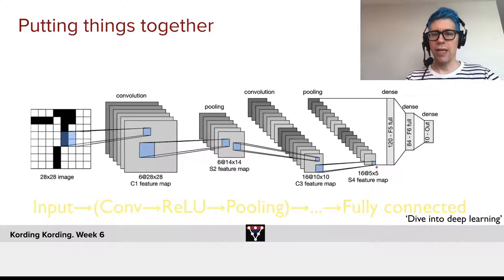So, now, we can, of course, flatten this, producing a long vector, and then, we will switch to a dense network, where we go here, to 120 units, 84 units, and 10 units at the end.